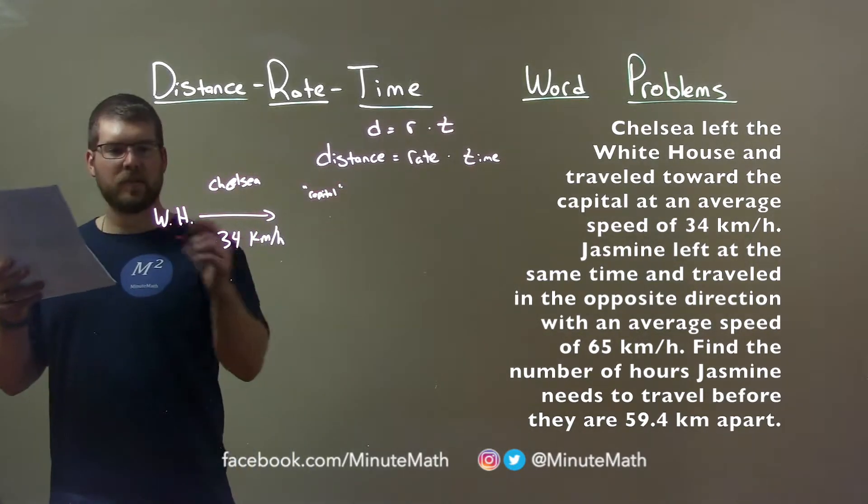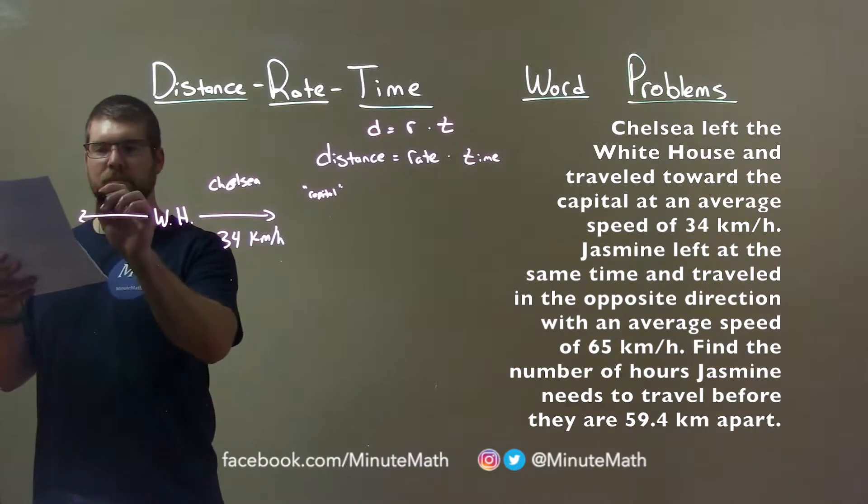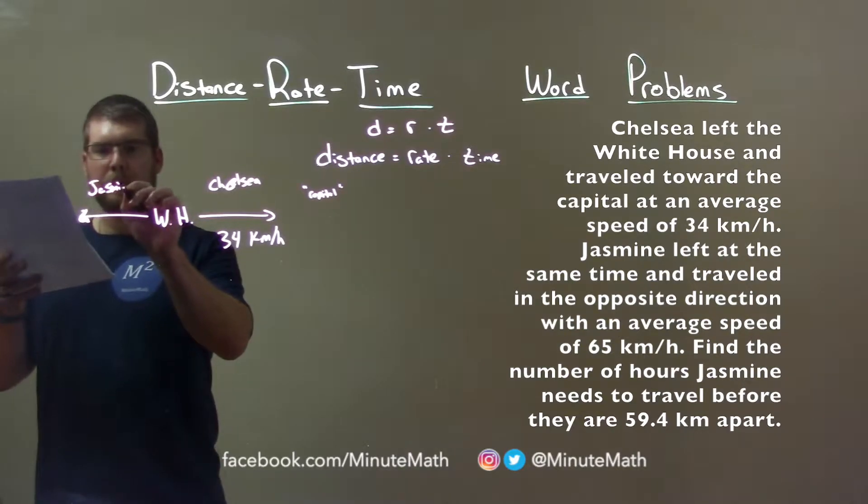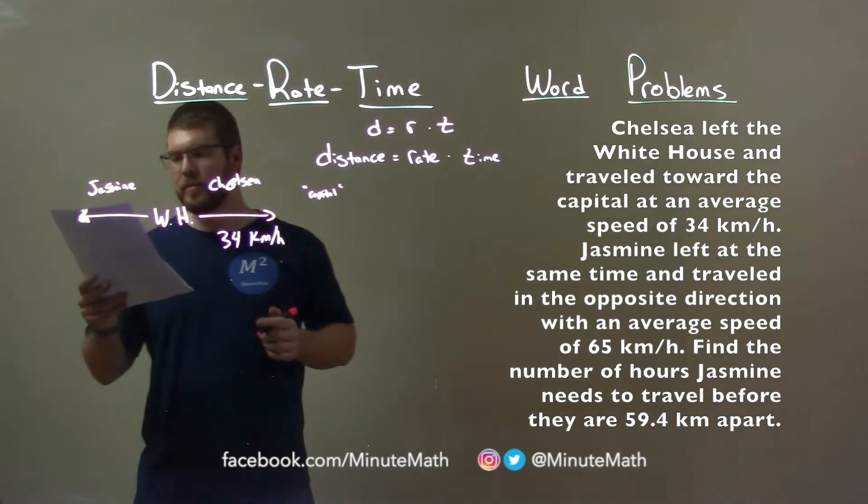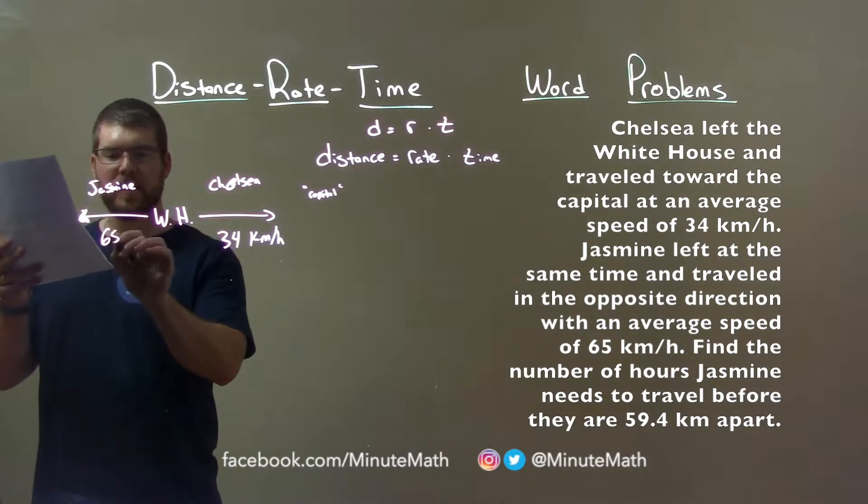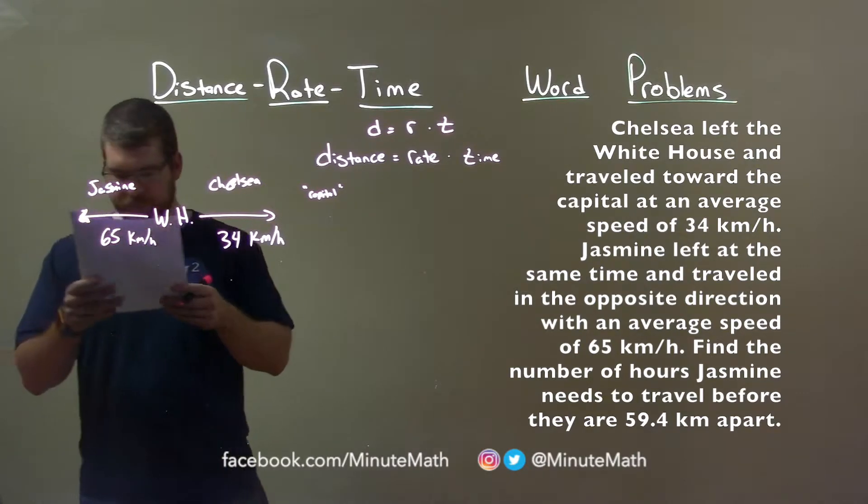Okay, Chelsea, Jasmine goes in the opposite direction. That's Jasmine. She's traveling 65 km per hour.